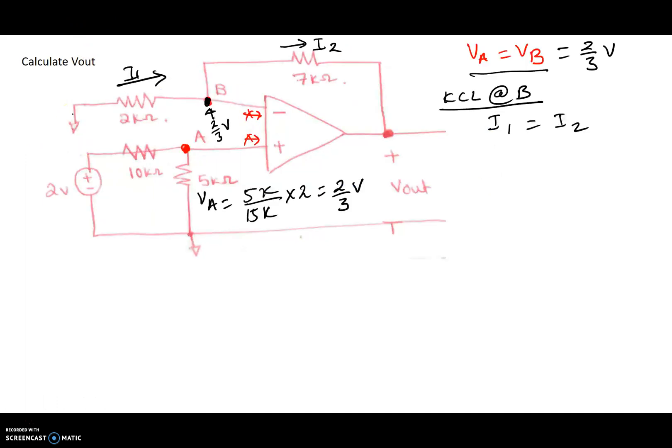I1 flows from ground, which is 0 volts, to VB. So 0 minus VB divided by 2 kilo ohms, in other words, 2000 ohms.